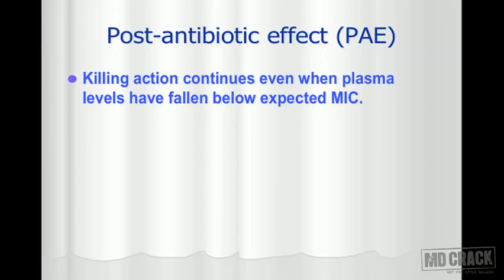You are giving a drug to your patient and you know the minimum inhibitory concentration required. For a few antimicrobial agents, if you check the plasma, the concentration is less — even below the MIC required for inhibition. But if you go to the tissues and look at the microorganisms, they are still being killed. So the plasma concentration may be below MIC, but the killing effect continues — that is the post-antibiotic effect.